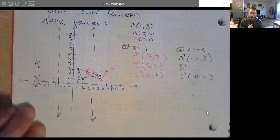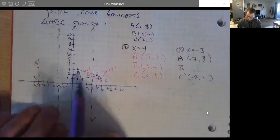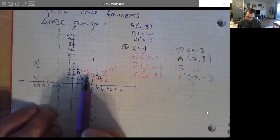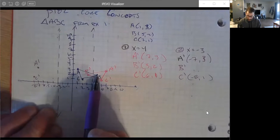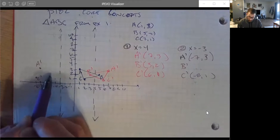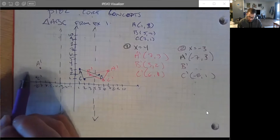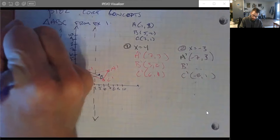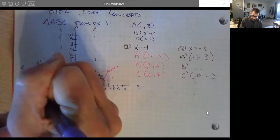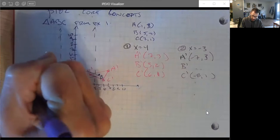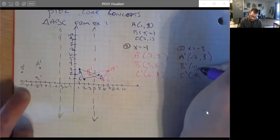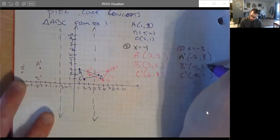And then finally, let's be very careful. B is one, two, three, four, five, six, seven, eight units to the right. So B prime is going to be eight units to the left. One, two, three, four, five, six, seven, eight. Negative seven, negative eight, negative nine, negative 10, and negative 11. So negative 11 comma two.